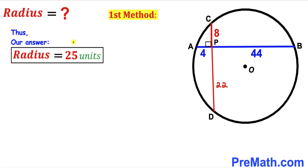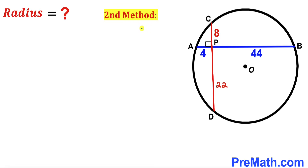Adding those values gives 4r² equals 2500, so r² equals 625, and the radius turns out to be 25 units using the first method.